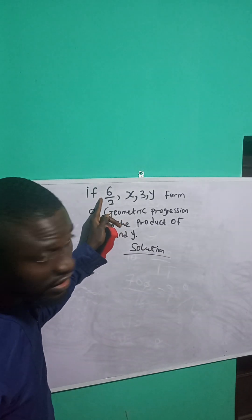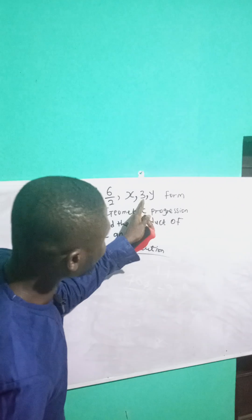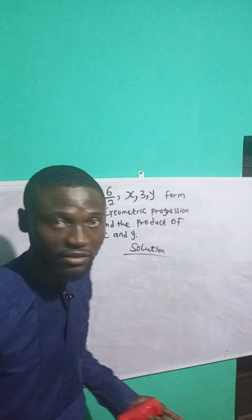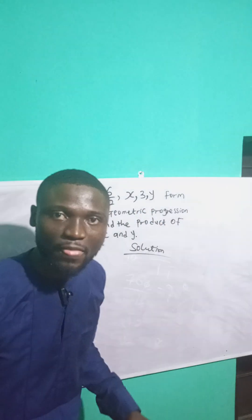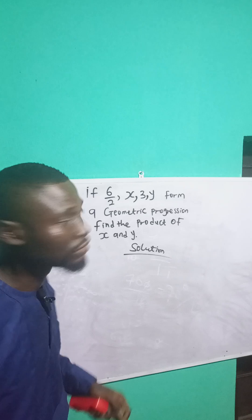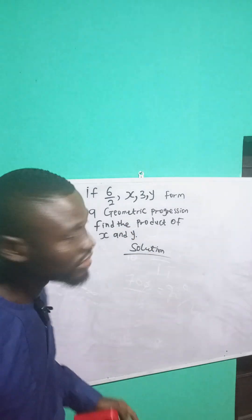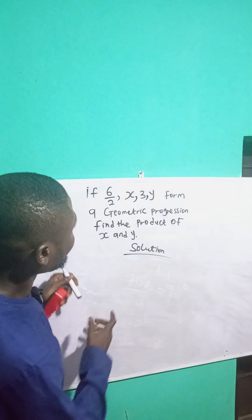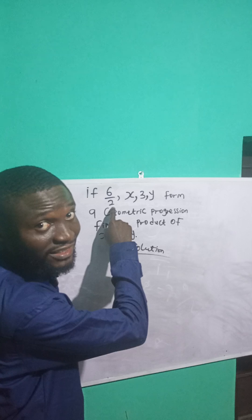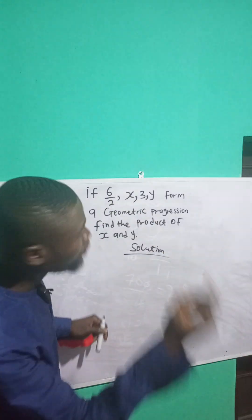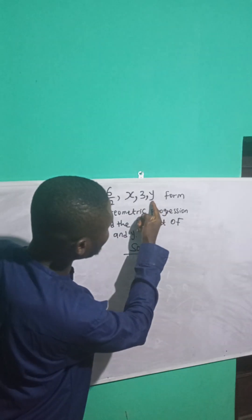This is the first term, this is the second term, this is the third term, and this is the fourth term. Remember that the principle of finding the common ratio in geometric progression is the second term divided by the first term, or the third term divided by the second term.